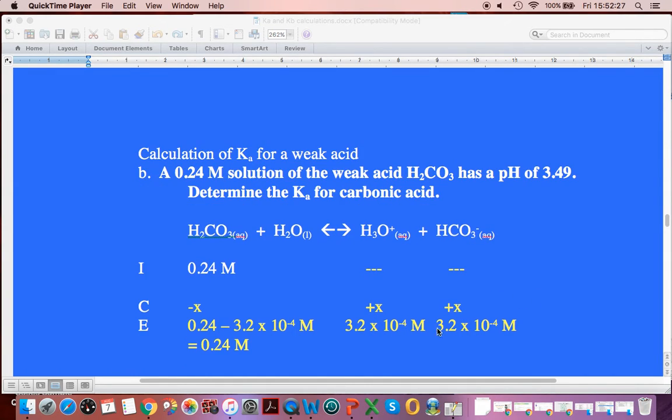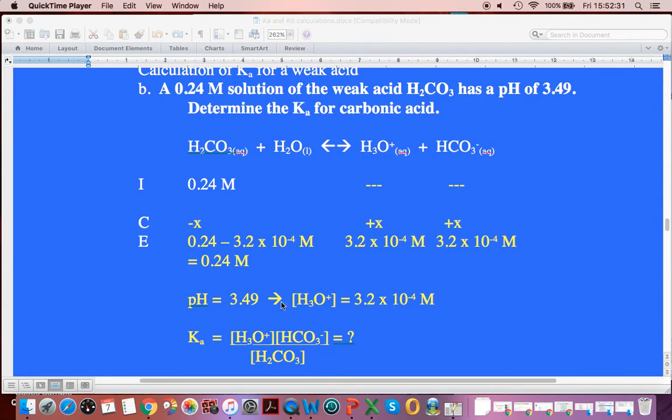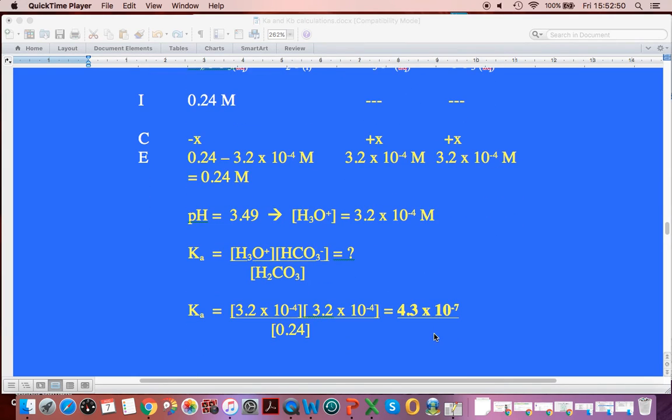So to get our Ka value, we write out our Ka expression. So here we've taken our pH to get our 3.2 times 10 to minus 4. We're going to plug that number in there. We're going to plug it in here as well. And then the 0.24 goes right in here for the H2CO3. We're just substituting these three numbers into our Ka expression. And our Ka comes out to 4.3 times 10 to minus 7.